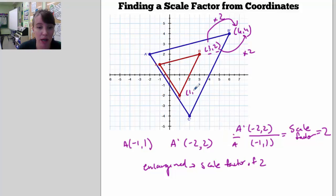So C was 1, negative 2. If I multiply both of them by 2, I would get 2, negative 4. And you'll see that that is the coordinates of C prime. It's 2, negative 4.